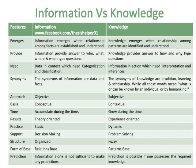The synonyms of information are data and facts, while the synonyms of knowledge are erudition, learning and scholarship — all meaning what is or can be known by an individual or by humankind. The approach of information is objective, while the approach of knowledge is subjective. The basis of information is conceptual, while the basis of knowledge is contextual.